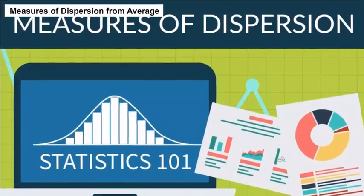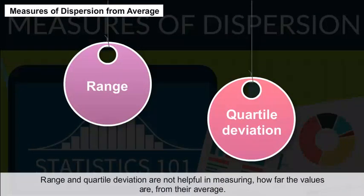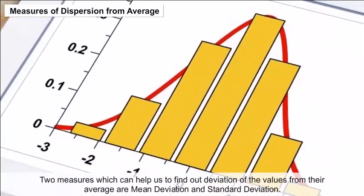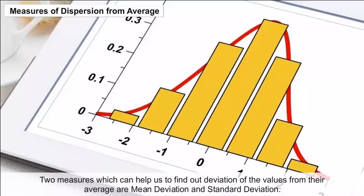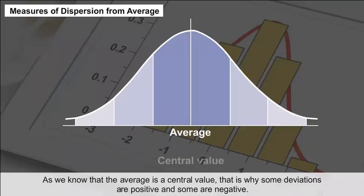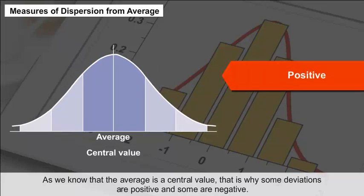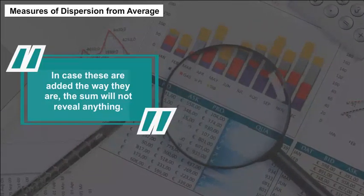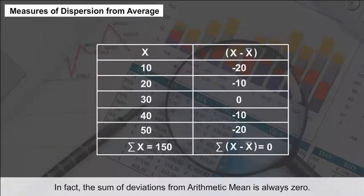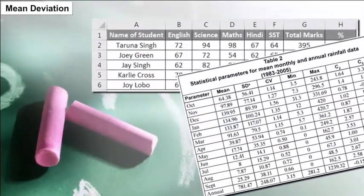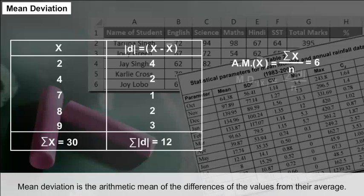Measures of dispersion from average: Range and quartile deviation are not helpful in measuring how far the values are from their average. Two measures that can help find out deviation of values from their average are mean deviation and standard deviation. Since the average is a central value, some deviations are positive and some are negative. The sum of deviations from the arithmetic mean is always zero.